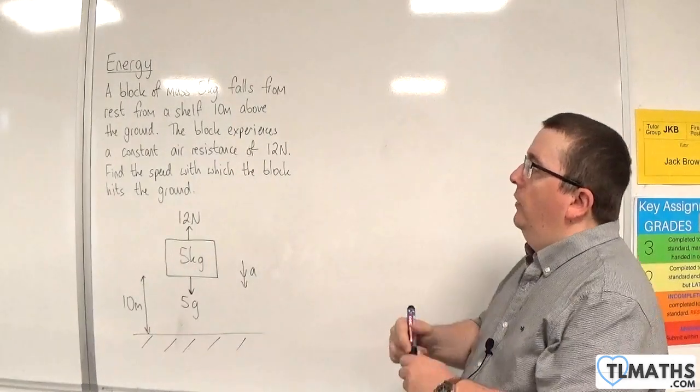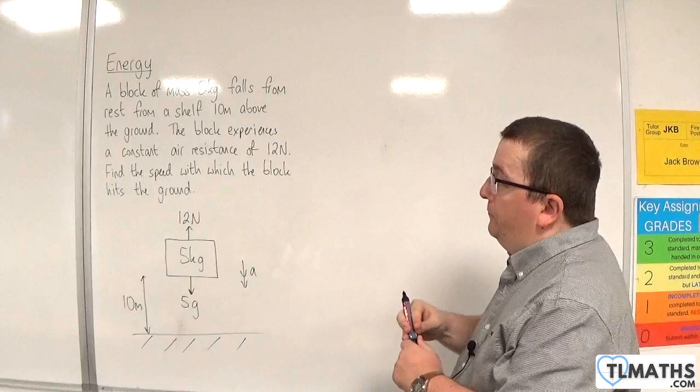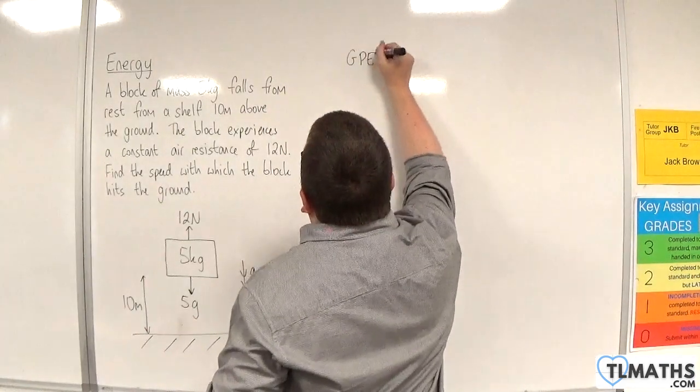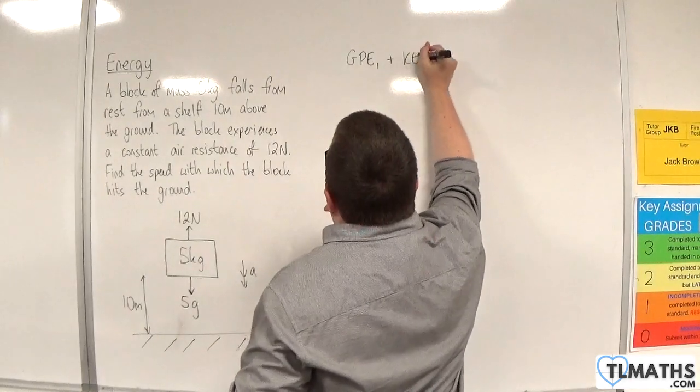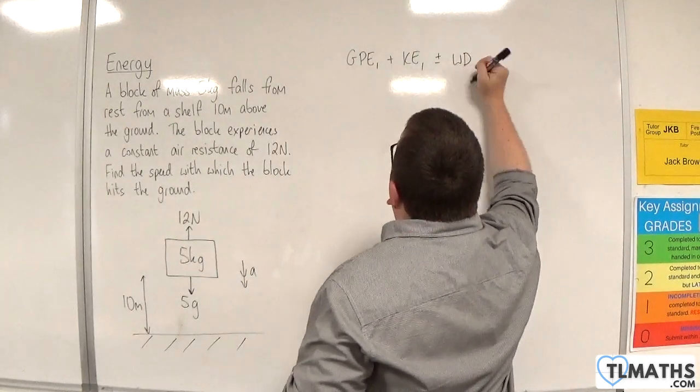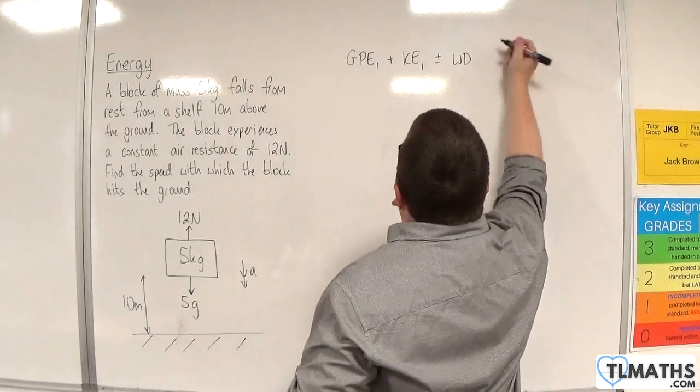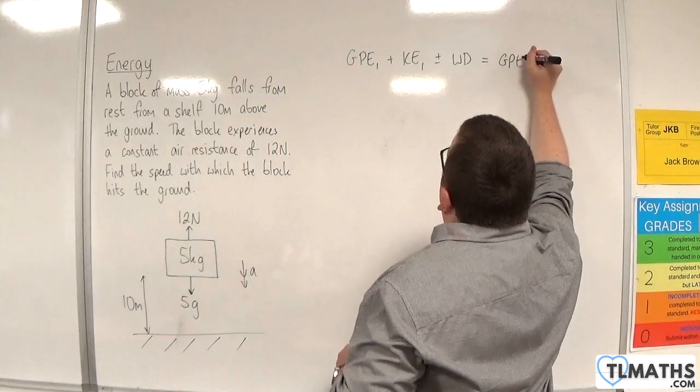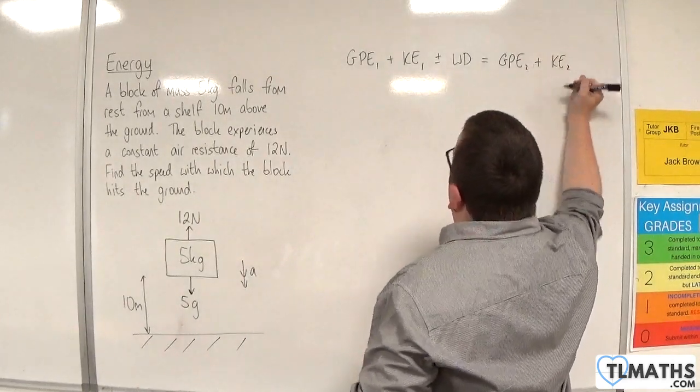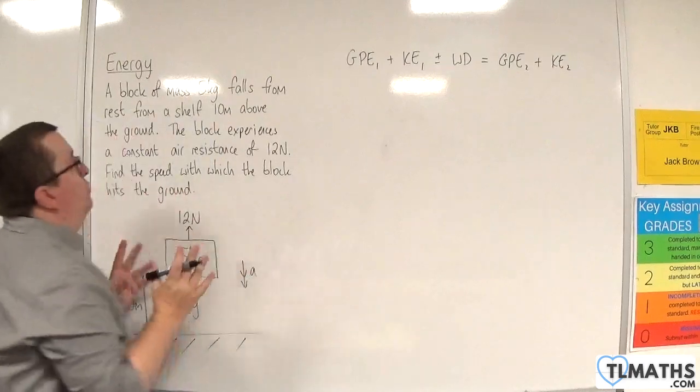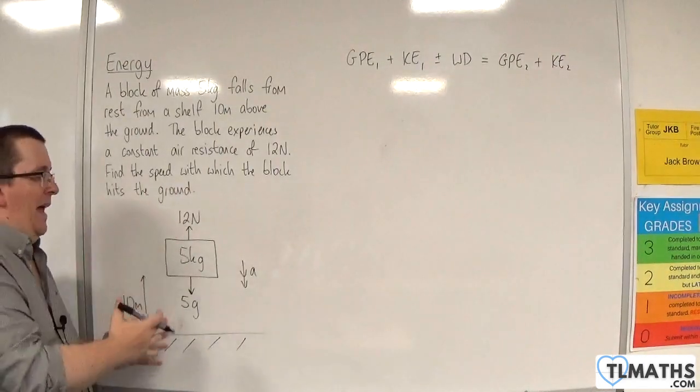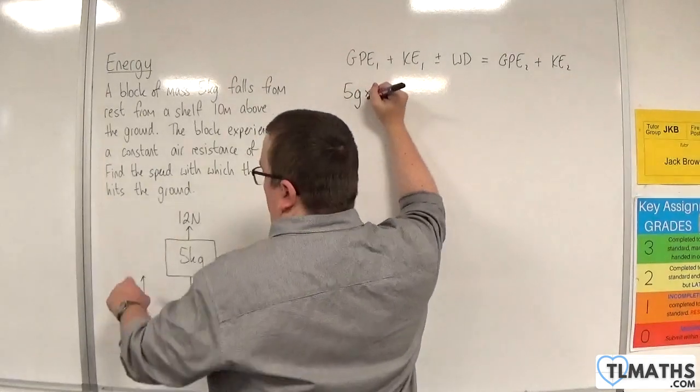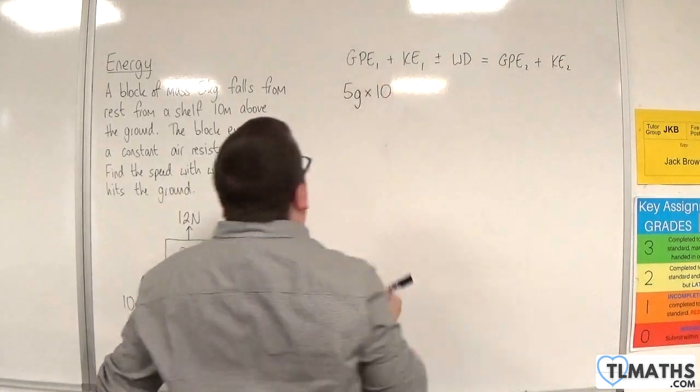But we're going to use an energy method. So we have the initial GPE plus the initial kinetic energy plus or minus the work done by any of the forces in the direction of motion is equal to the final GPE plus the final kinetic energy. So the initial GPE is MGH. So we're going to have 5G times H, which is 10. It's 10 metres high initially.